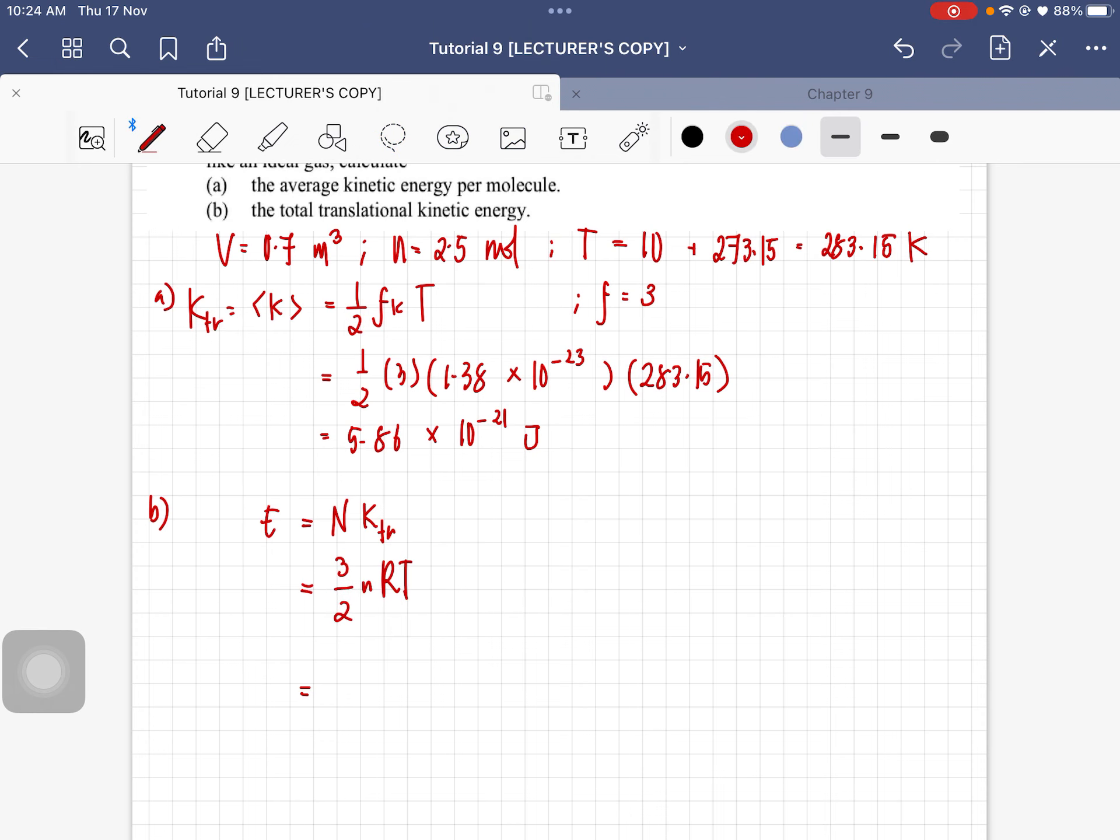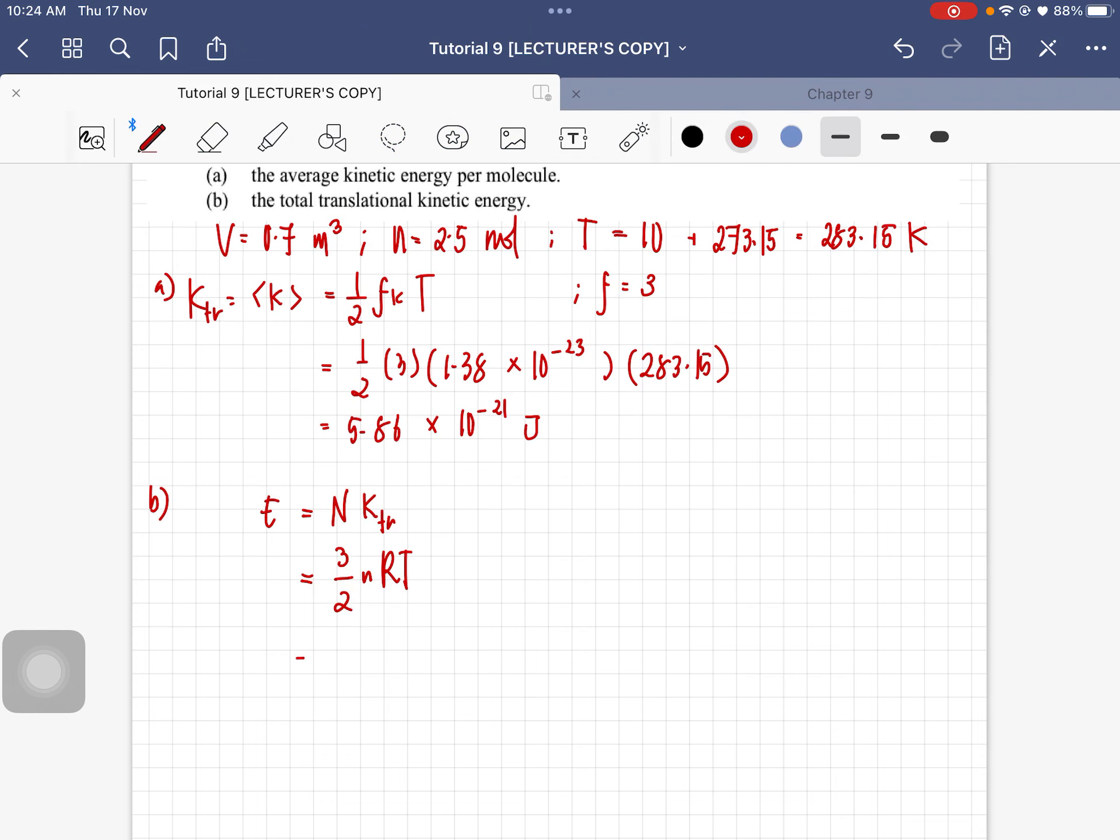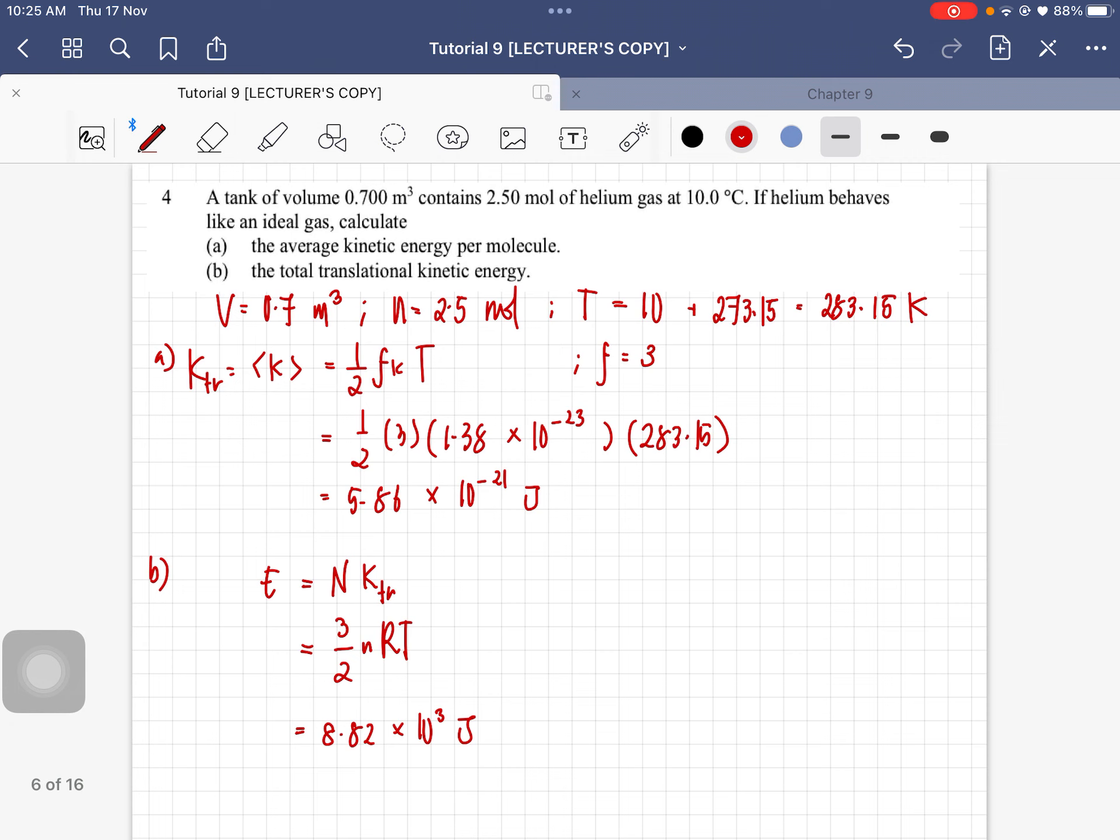So from here, bila kamu substitute and calculate that, you will get that the total translational kinetic energy is equal to 8.82 times 10 to the power of 3 joules. So that is full question number 4.